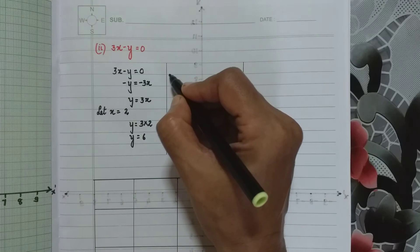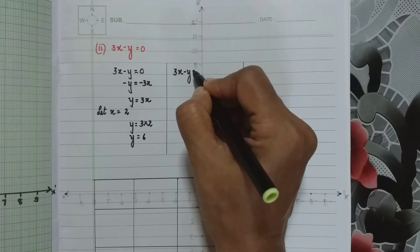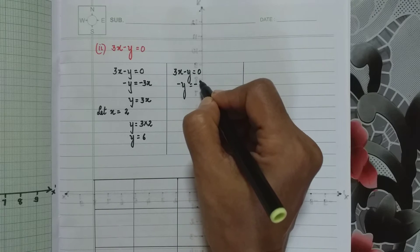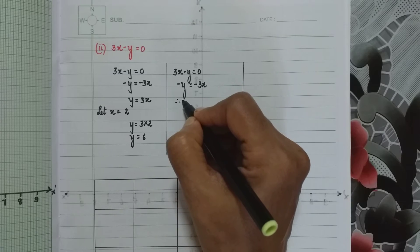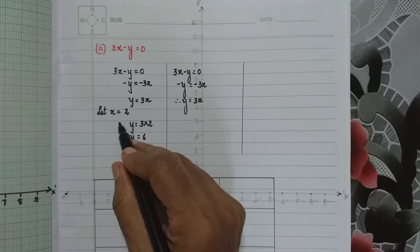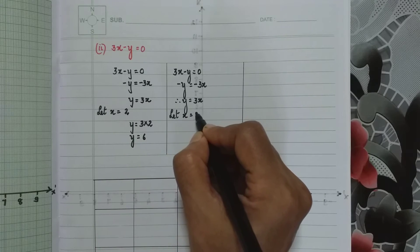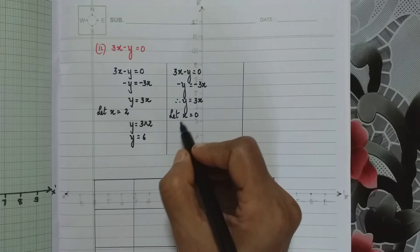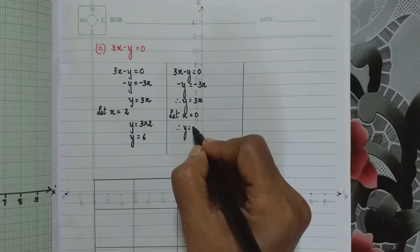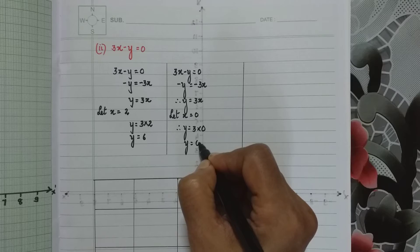Then I told you the same steps we write. So we write 3x minus y equals 0, so minus y equals minus 3x. Therefore y equals 3x. Now we have to consider the value of x. Now we take x equals 0. So let x is 0. So y will be 3x, so 3 times 0. So y also will be 0.